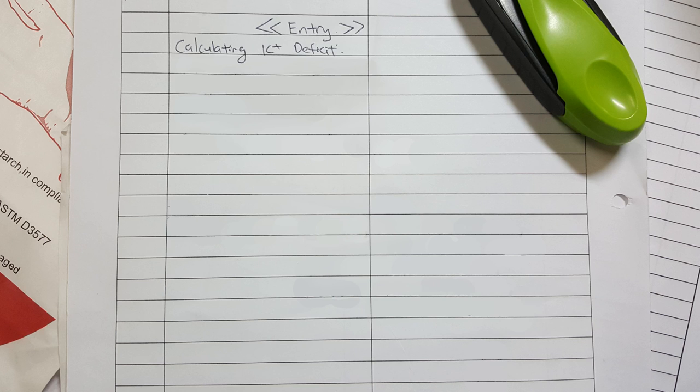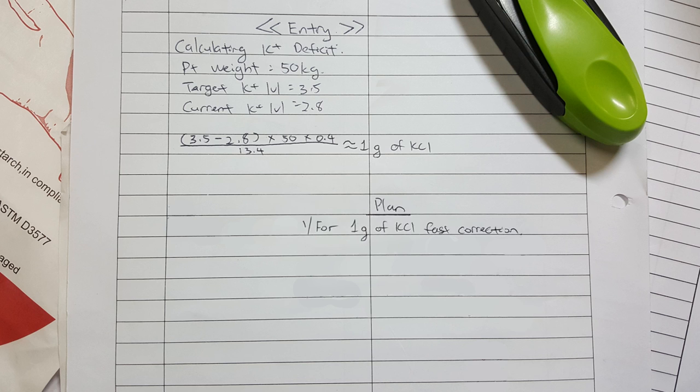Quick example. A 50 kg patient came in with potassium level of 2.8, and we are trying to correct him to 3.5. So how many grams of KCL should we fast correct him? 3.5 minus 2.8 times 50 times 0.4 and divide the total value with 13.4. And we will get around 1 gram of KCL. So it is 1 gram of KCL in 100 cc of normal saline over 1 hour for that patient.